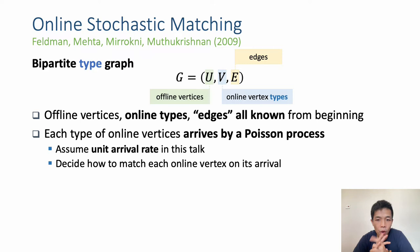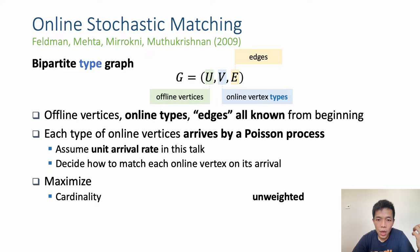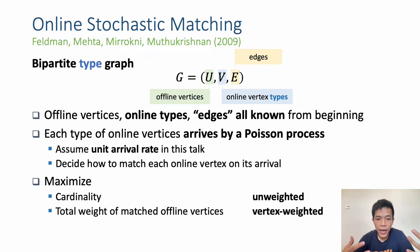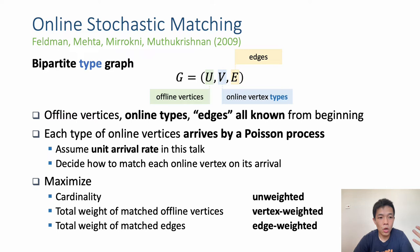When an online vertex arrives, the online algorithm needs to immediately decide how to match it. Just like in online bipartite matching, we can consider different objectives — for example, maximizing the number of edges in the matching (the unweighted case), or the more general case where offline vertices have positive weights and we maximize the total weight of matched offline vertices, or even maximize the total weight of matched edges.